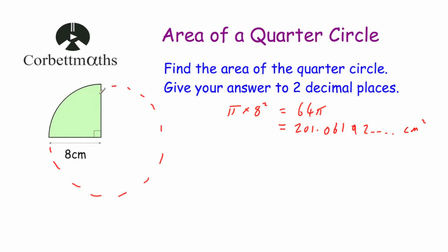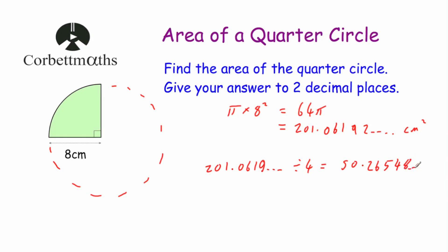Now we want to find the area of the quarter circle, so we just need to divide by four. We can do 64 pi divided by four, or 201.0619… divided by four, and that gives us an answer of either 16 pi or 50.26548… centimetres squared. To two decimal places, that's 50.27 centimetres squared — the area of this quarter circle.